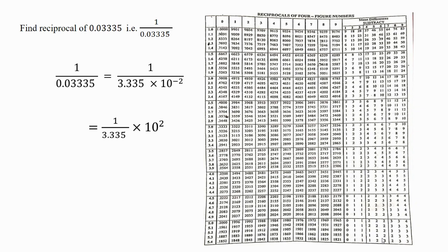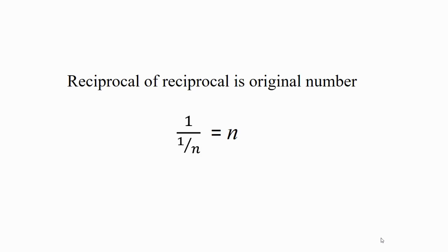Now let's find the reciprocal value. For that I consider 3.3 in the very first column. Along the 3.3 row I observe the value under the 3rd column. Then I subtract the mean difference along the same row under the 3rd column. So the value comes out as 0.2999 into 10 raised to 2. When I multiply by 10 raised to 2 I get the value 29.99. This value is the same as the number whose reciprocal is 0.03335. From this we can say: the reciprocal of a reciprocal is the original number.